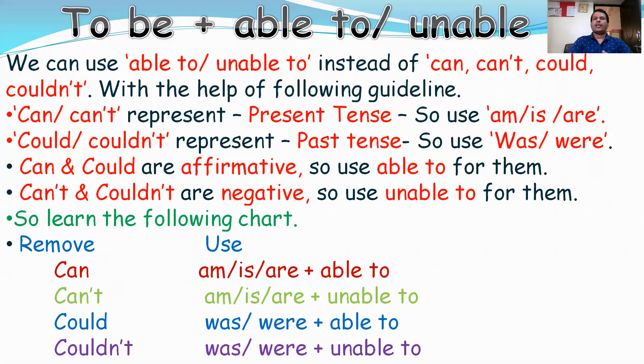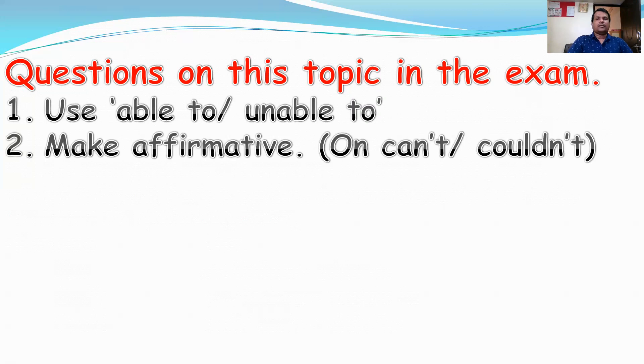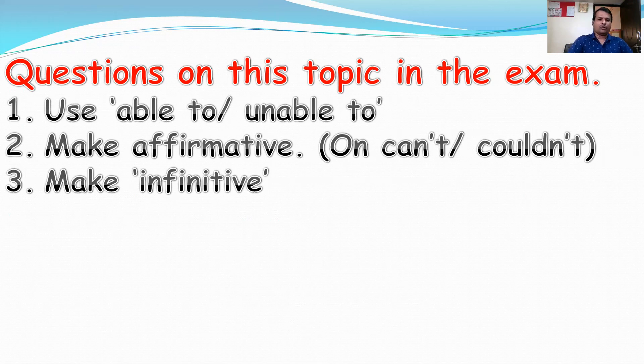You can convert any sentence using able to or unable to. This appears in exams - able to or unable to is a direct question. You make affirmative or negative sentences. The third question concerns infinitives. When you use able to and unable to, the first form of the verb follows, and the infinitive is ready. In sentences with can, can't, could, couldn't, you need to form infinitives.